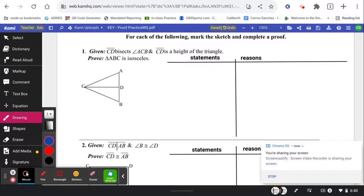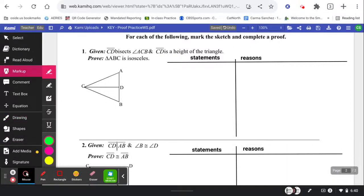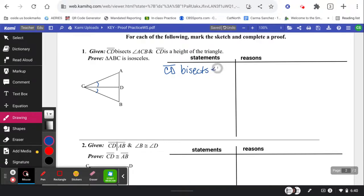All right. We're being told that CD, that's this length here, bisects angle ACB. So when we have a little segment that's bisecting an angle, we know that the big angle is being cut into two little angles. So let's go write down our givens. CD bisects angle ACB.